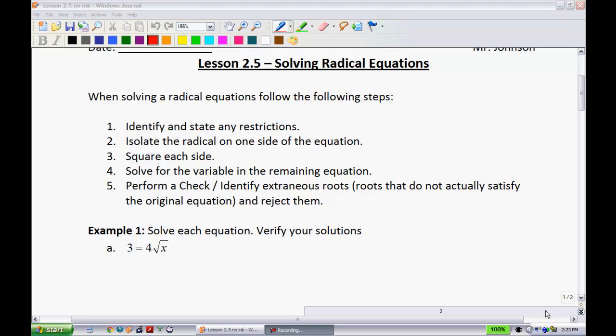It says identify and state any restrictions. So we've gone over kind of how to state restrictions. It's not too tough. I'll also show you an easy way when we're dealing with radicals here. That works every single time. Step 2, isolate the radical on one side of the equation. What I mean by that is just get the radical by itself. Get rid of everything else that is on that side, wherever it happens to be.